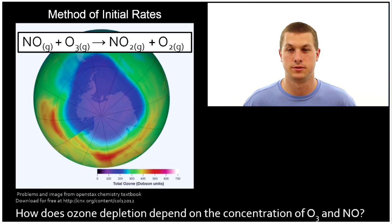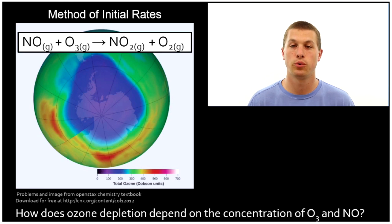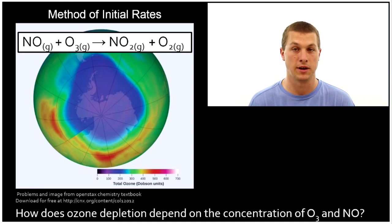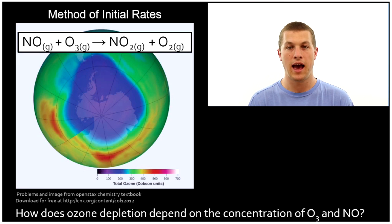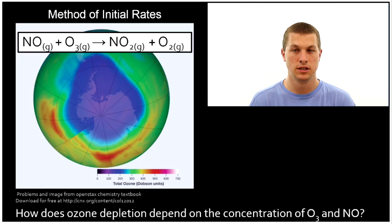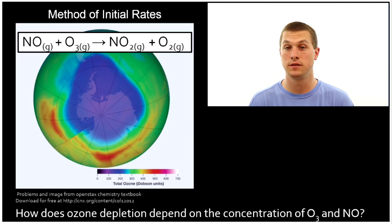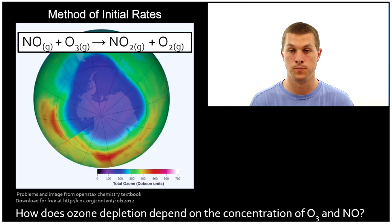Welcome to Real Chemistry. I'm Dr. Morris and today on the show we're going to talk about the method of initial rates. Basically it's a way to determine how the rate of a chemical reaction depends on the concentration of the chemical species present.